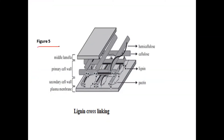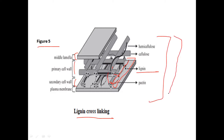In Figure 5, you can see the lignin cross-linking. This is a typical cell wall showing the middle lamella, the primary wall, and the secondary wall. We already know that lignin is present in the secondary wall. You can see here lignin forms cross-links with cellulose, hemicellulose, and pectin, which helps in the rigidity and mechanical strength of a lignified wood.